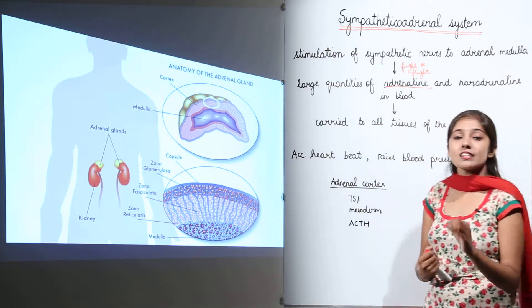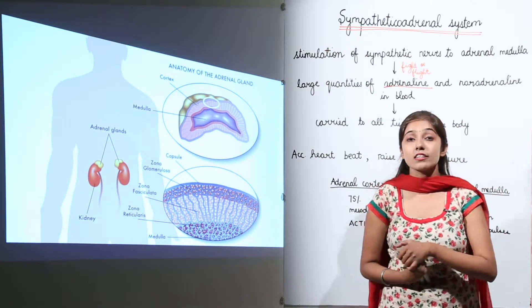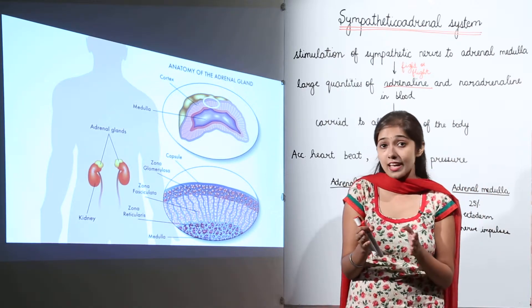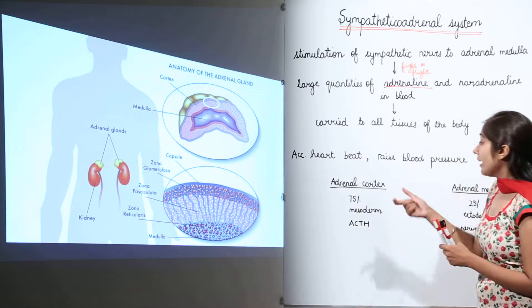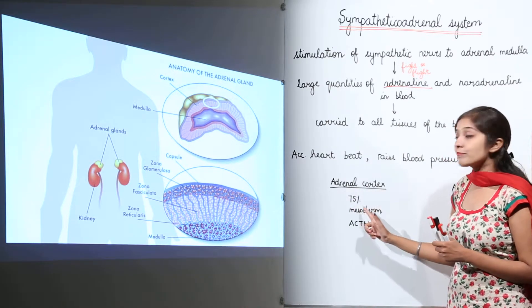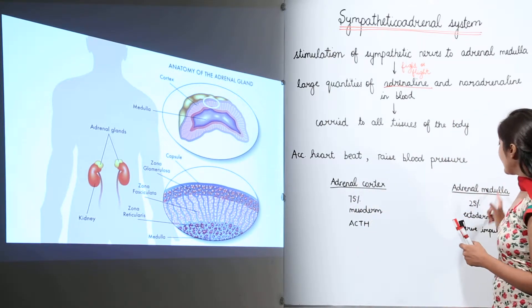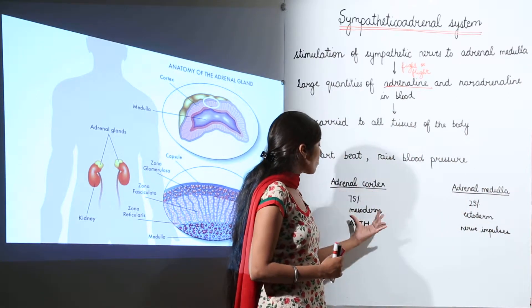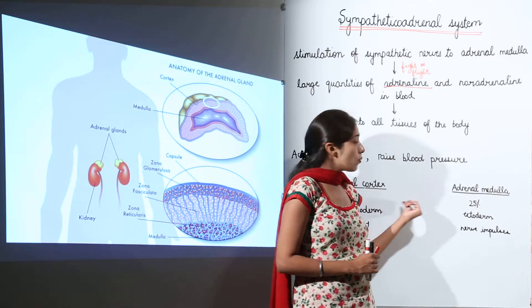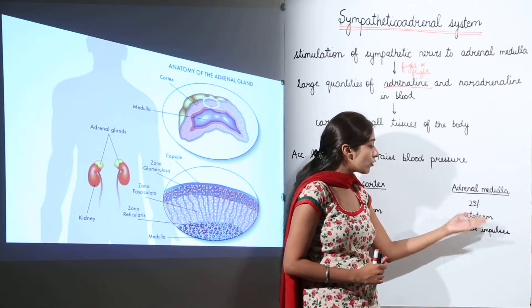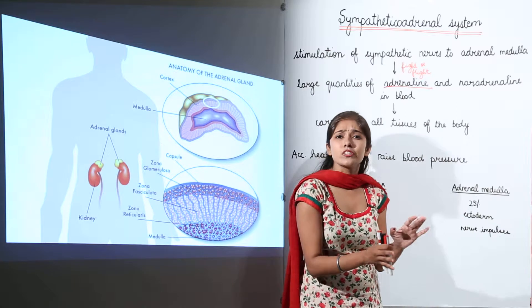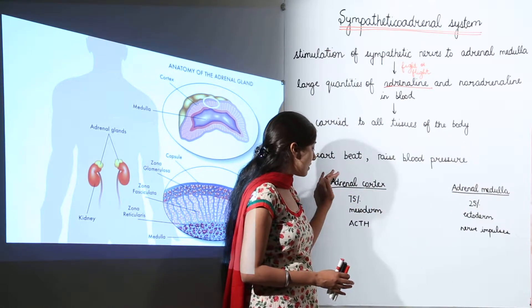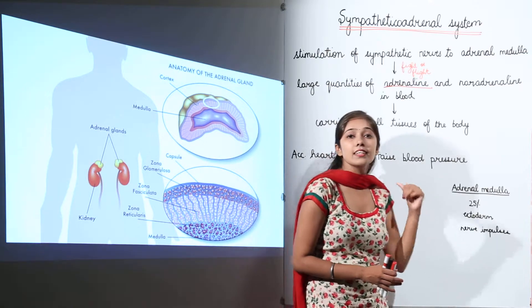Now let's discuss the major differences between the two parts of the adrenal gland: the adrenal cortex and adrenal medulla. The adrenal cortex forms 75% of the adrenal gland while the adrenal medulla forms only 25%. The adrenal cortex is formed from the mesoderm of the embryo, while the adrenal medulla is formed from the ectoderm. Regarding hormone release, the adrenal cortex is controlled by ACTH.